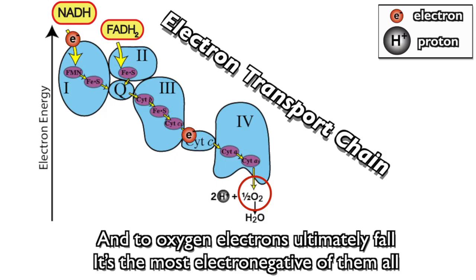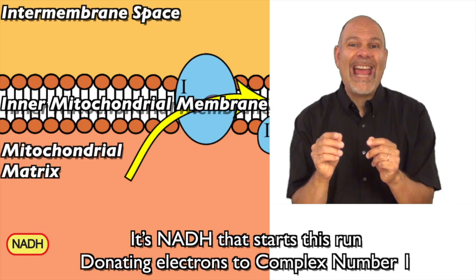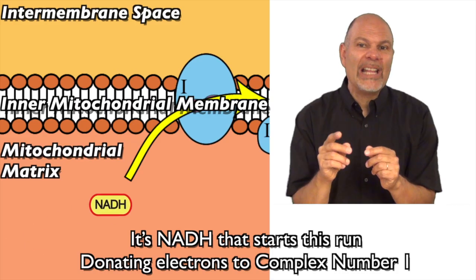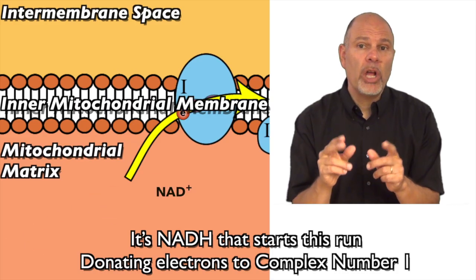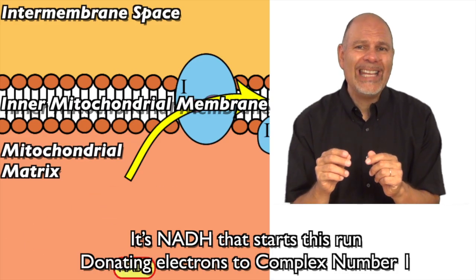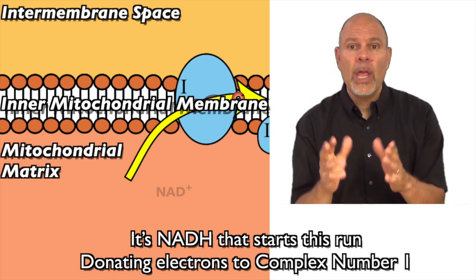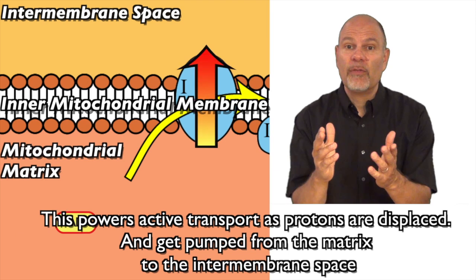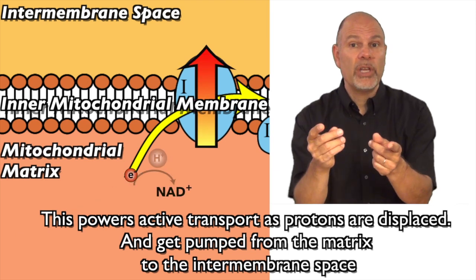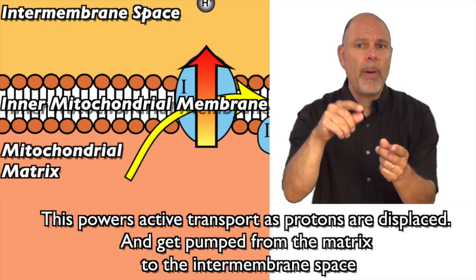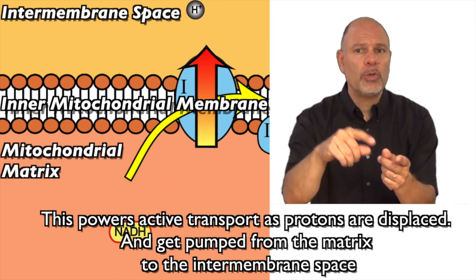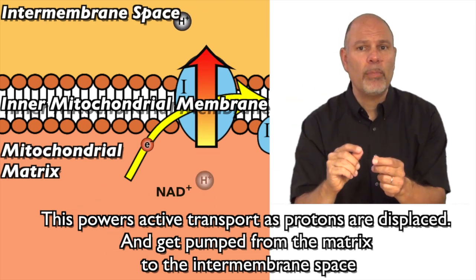Electrons ultimately fall to oxygen — the most electronegative of them all. It's NADH that starts this run, donating electrons to complex one. This powers active transport as protons are displaced and get pumped from the matrix to the intermembrane space.